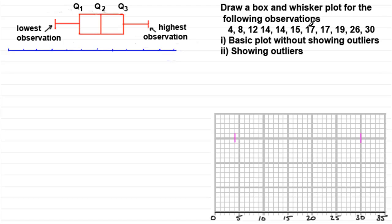We've got 11 values here. To find the position of the median, we add 1 to those 11 values to get 12, and divide by 2 — so it's the 6th value in. Counting 1, 2, 3, 4, 5, 6, that gives us 15. So the median, or Q2, is going to be at 15, and we draw that line down at 15.